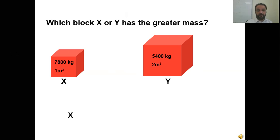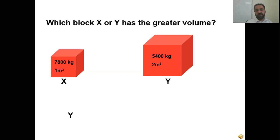Which block has the greater volume? Y has the greater volume. Using density equals mass by volume: for X, 7,800 divided by 1 gives density 7,800. For Y, 5,400 divided by 2 — you can calculate similarly.